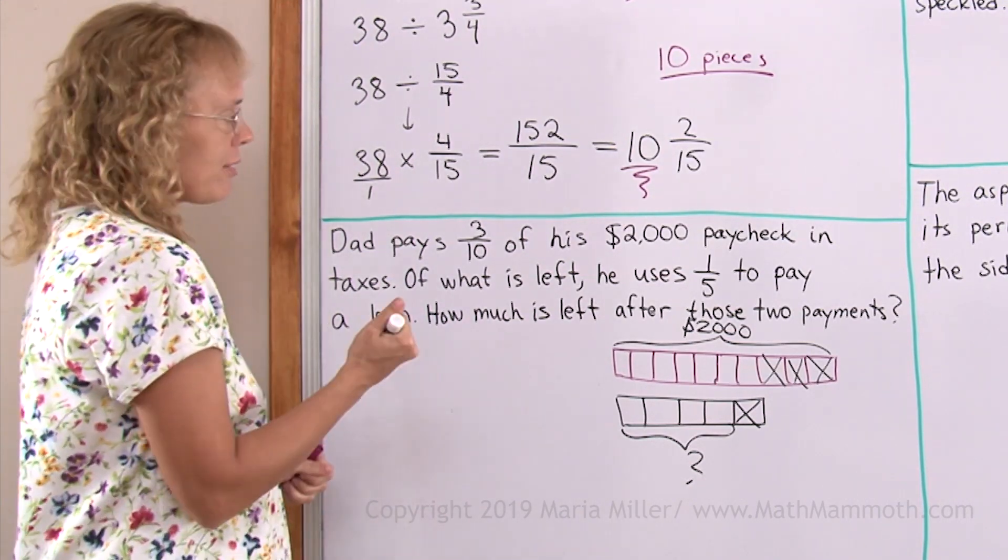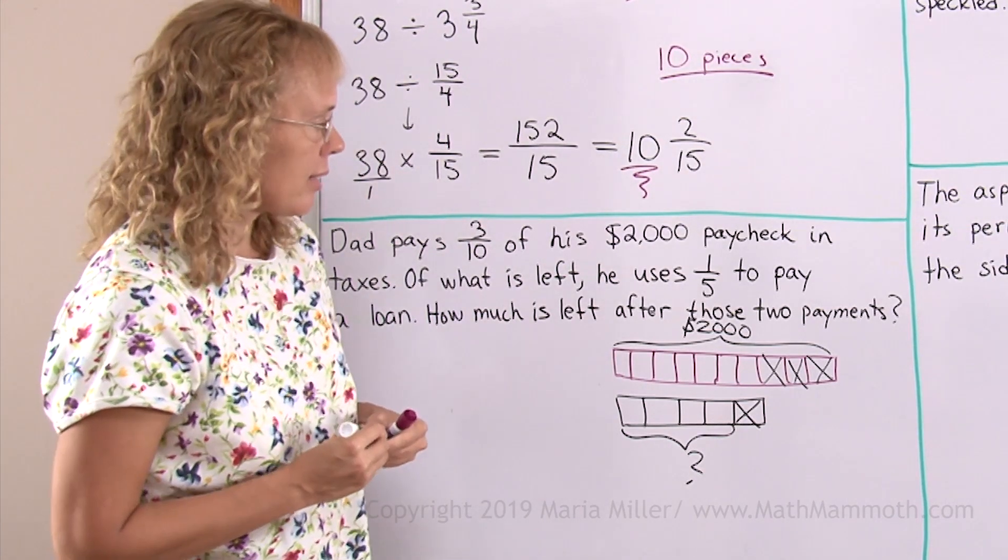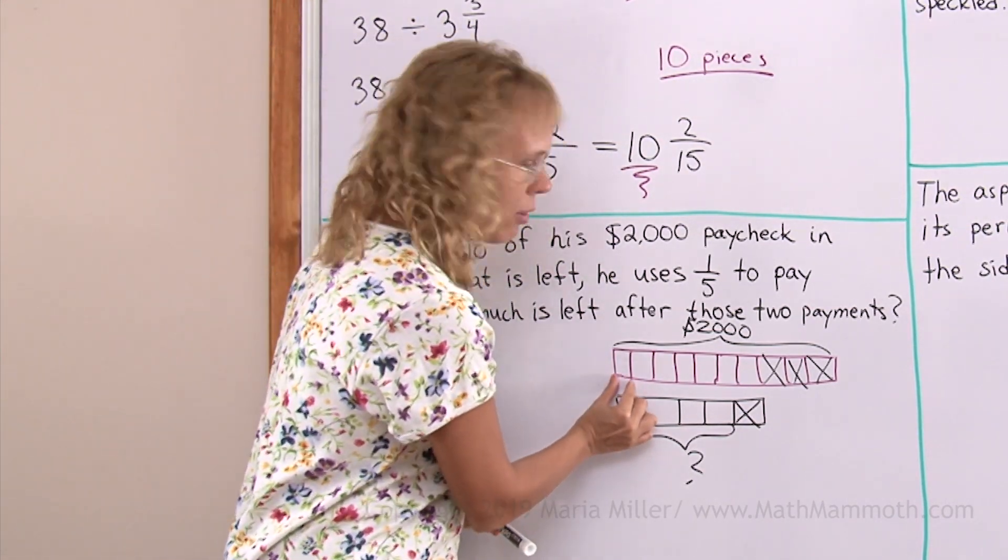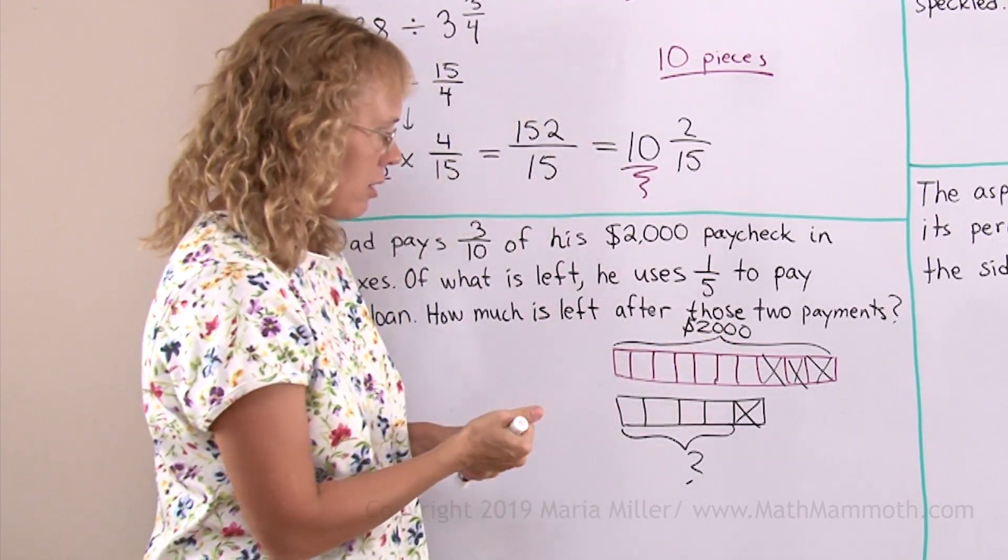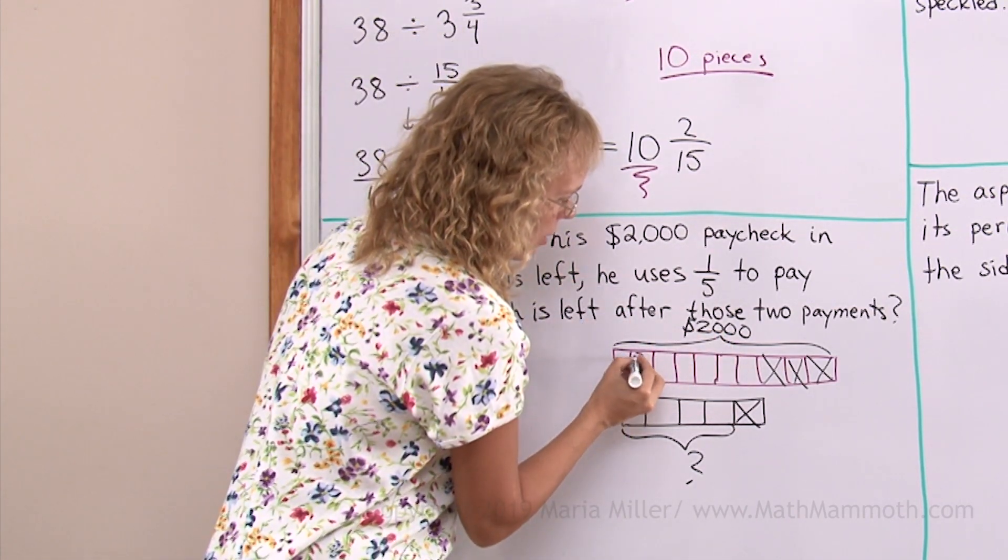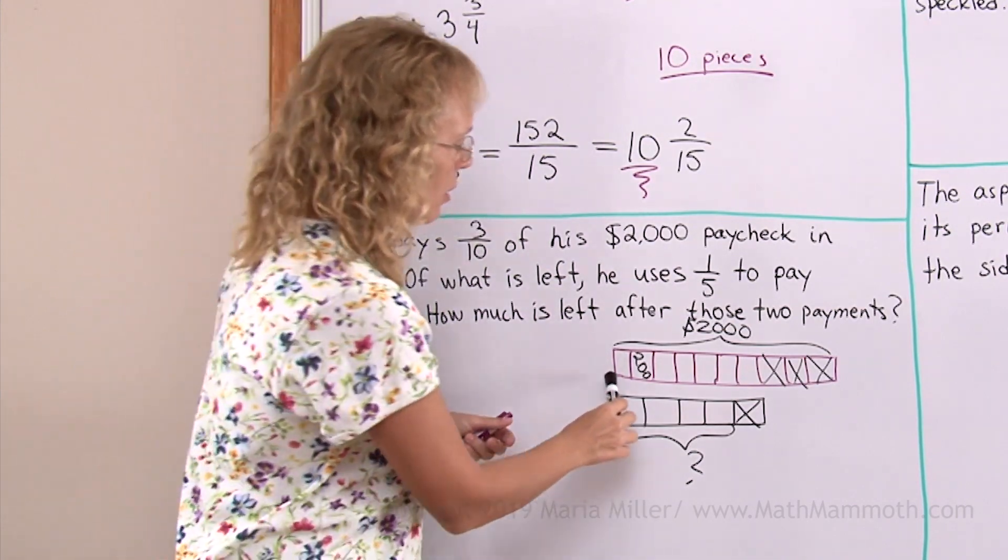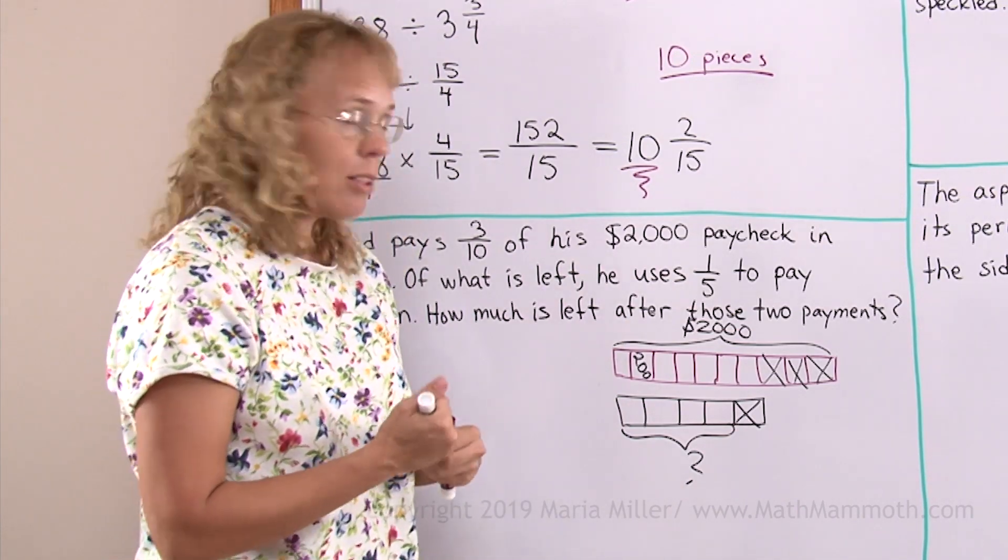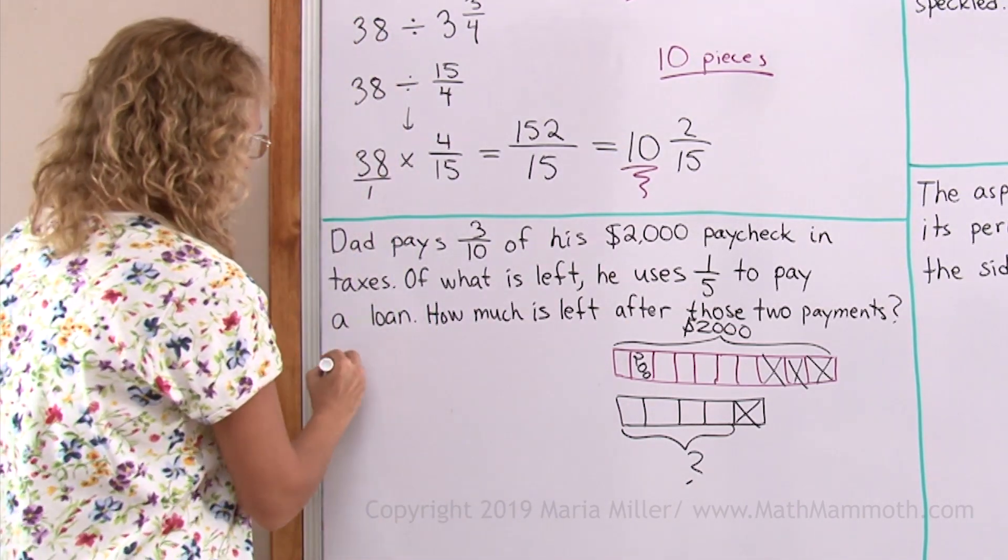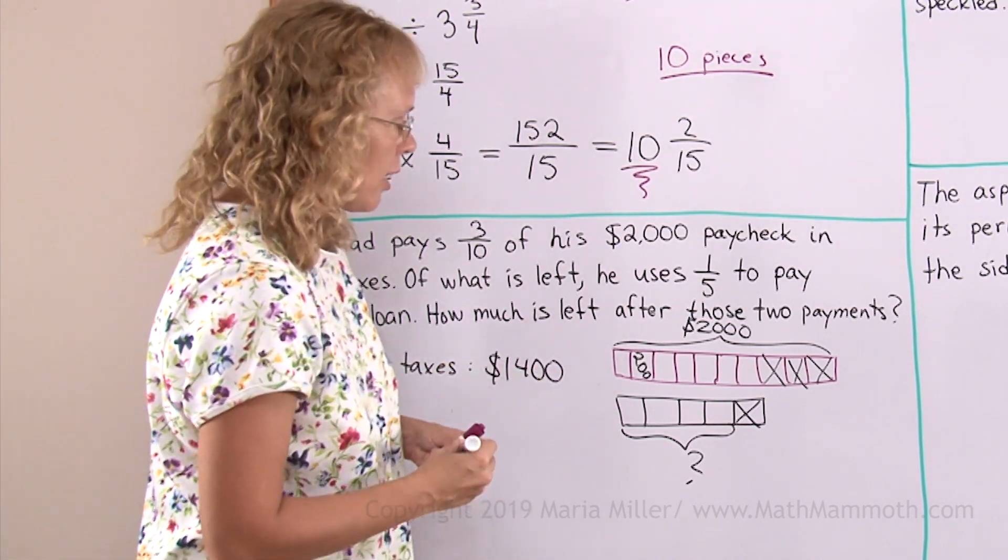So, what would be left if he pays three-tenths in taxes? How much would be this one block here, one-tenth? It's one-tenth of two thousand dollars, so that would be each block here is two hundred, right? So what he has left after taxes is this much, seven of those blocks times two hundred, which is one thousand four hundred. After taxes, that's how much he has left.